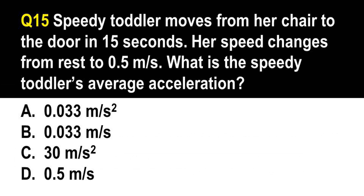Question number 15. Speedy toddler moves from her chair to the door in 15 seconds. Her speed changes from rest to 0.5 meter per second. What is the speedy toddler's average acceleration? A. 0.033 meter per second squared. B. 0.033 meter per second. C. 30 meters per second squared. D. 0.5 meter per second. The correct answer is A, 0.033 meter per second squared. Acceleration = change in velocity ÷ change in time. The change in velocity is 0.5 m/s (starting from rest), and the change in time is 15 seconds. So 0.5 ÷ 15 = 0.033 m/s².